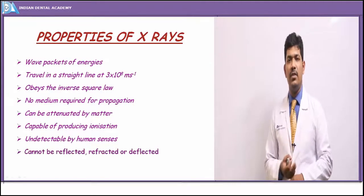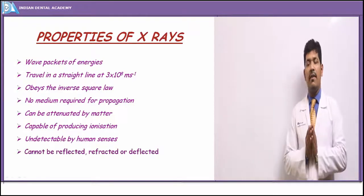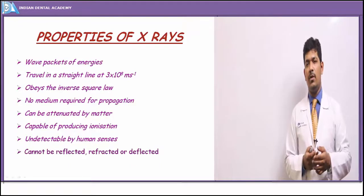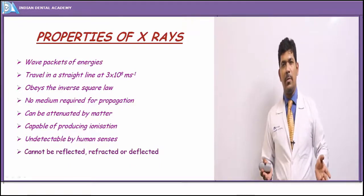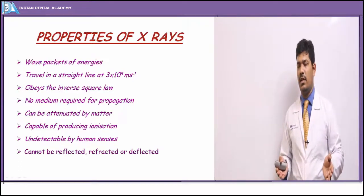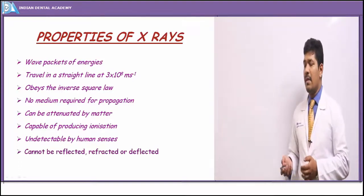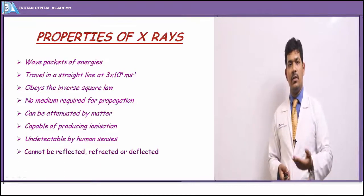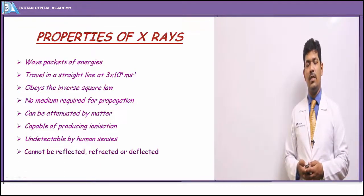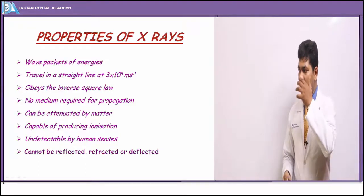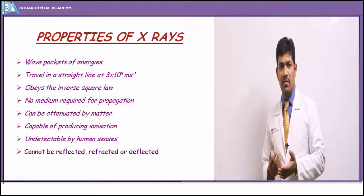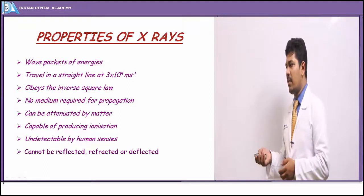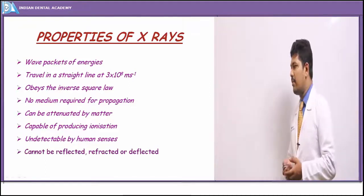Properties of x-rays: they are electromagnetic radiation — packets of energy — that travel in straight lines at the speed of light, obey the inverse square law, require no medium for propagation, can be attenuated by matter (producing radiopaque or radiolucent images), are capable of producing ionization, are invisible to human senses, and cannot be reflected or deflected.